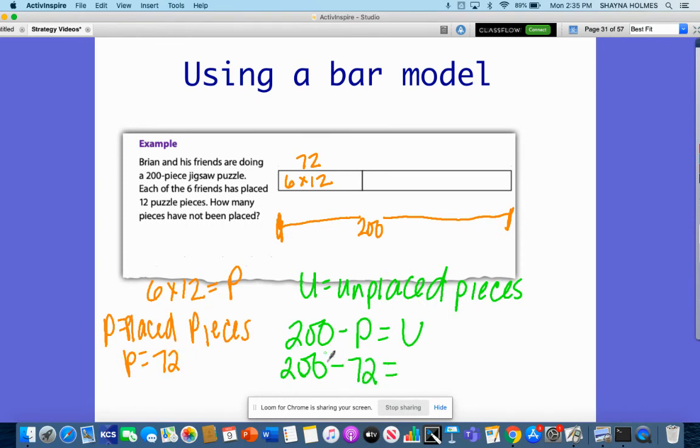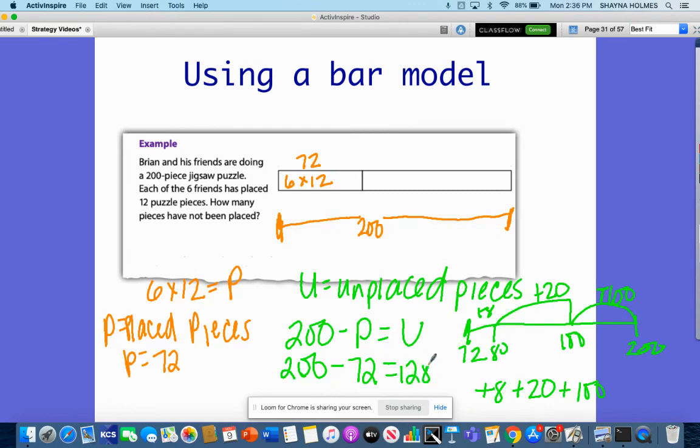Now I'm going to subtract. I do not like subtracting, so what I'm going to do is count up. I have 72 and I need to get to 200 here. I know if I go from 72 and if I add just 8, I'll get to 80. And then 80 to 100 is plus 20, and then 100 to 200 is another 100. So I've got plus 8, plus 20, plus 100, so I know that this will be 128.